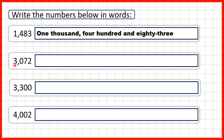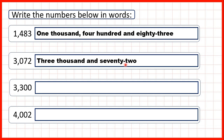Now for this number here, we have 3 as our thousands digit, so we can write 3,000. Then we look at the last three digits. This time we have 0, 72. This zero tells us that we don't have any hundreds in our number, so we can just write 'and 72'.